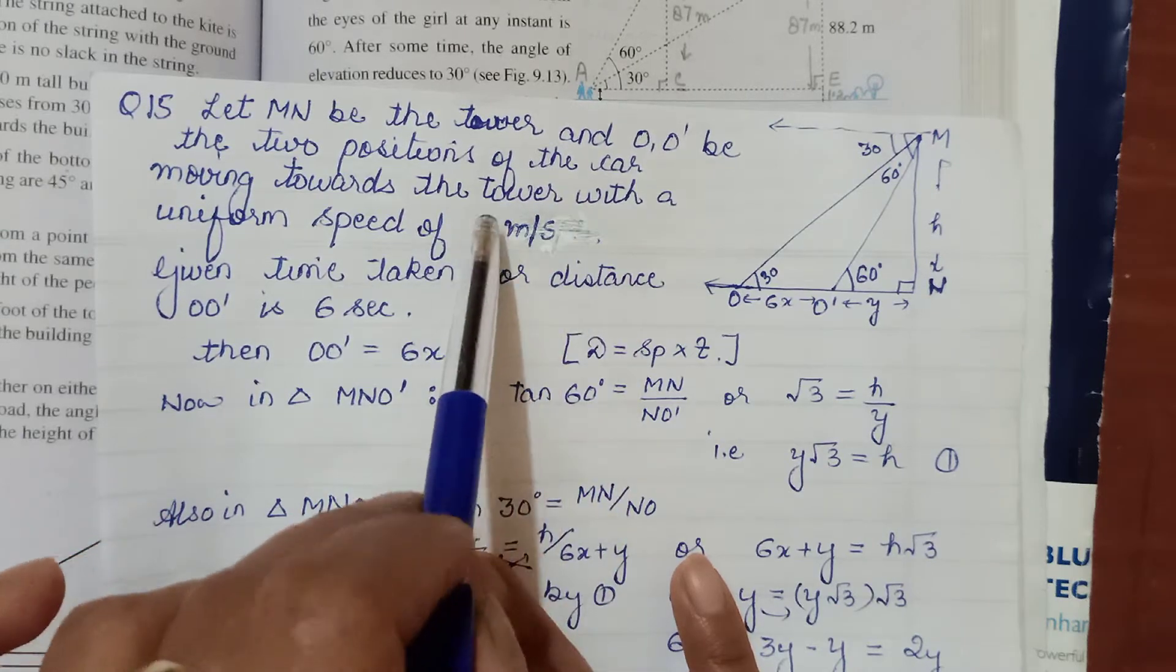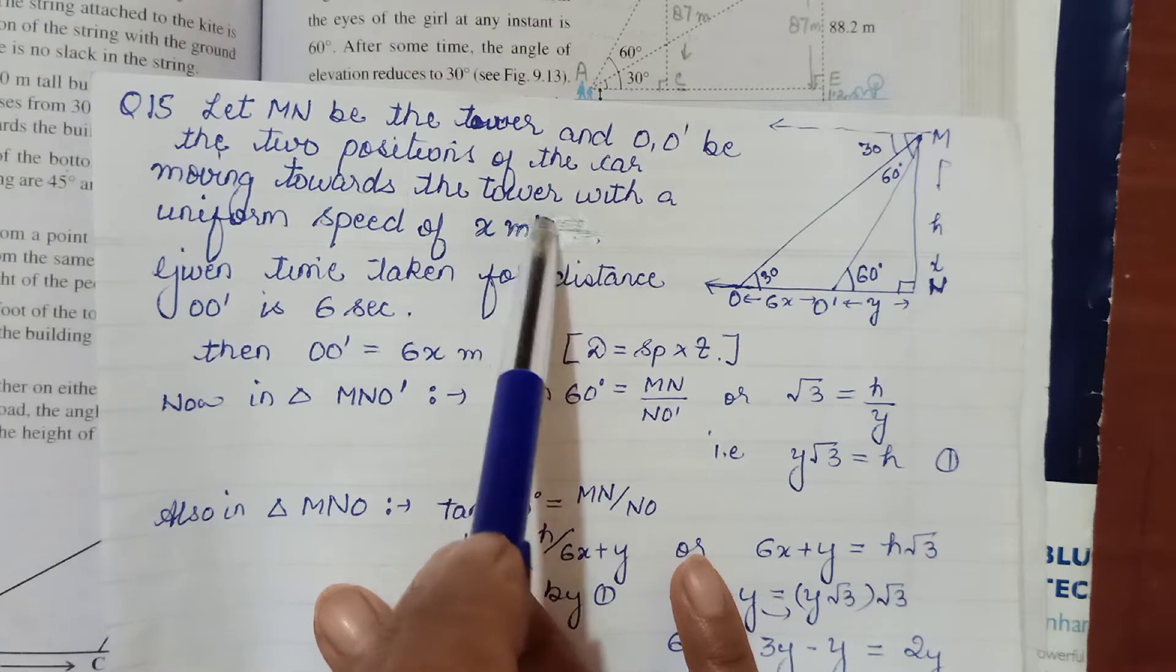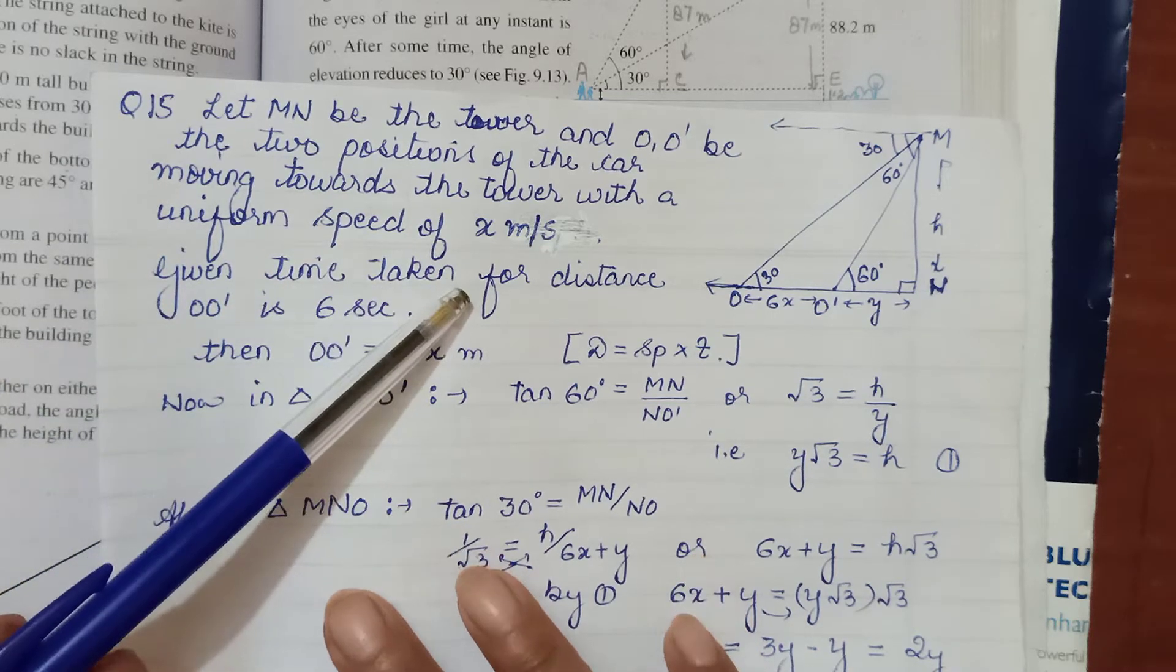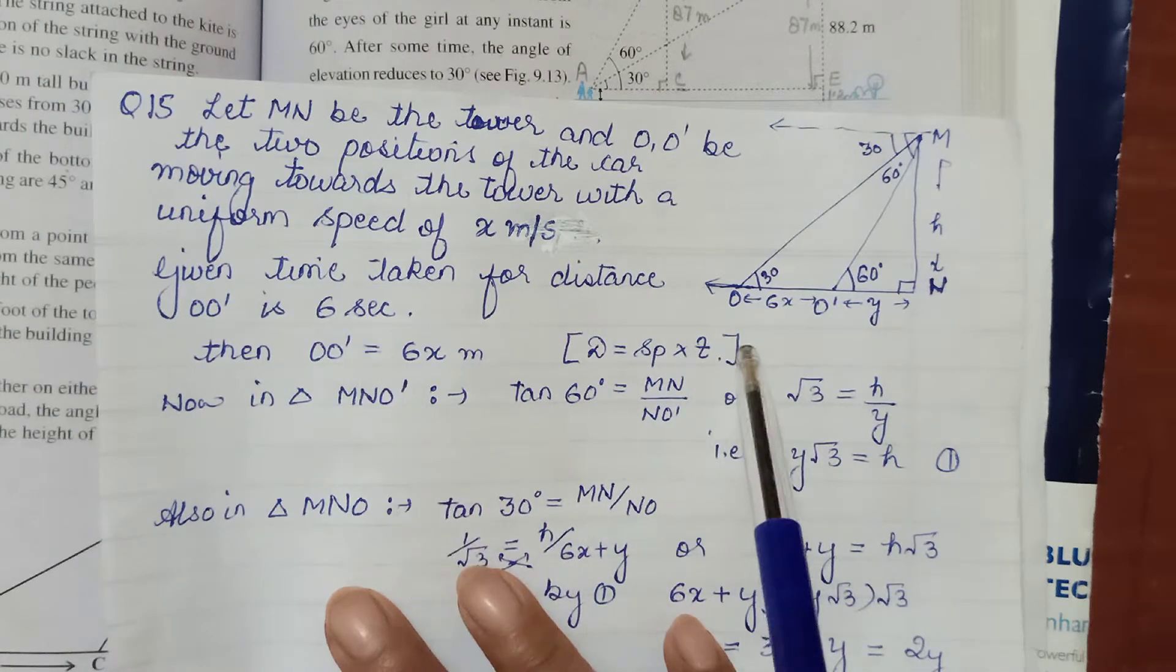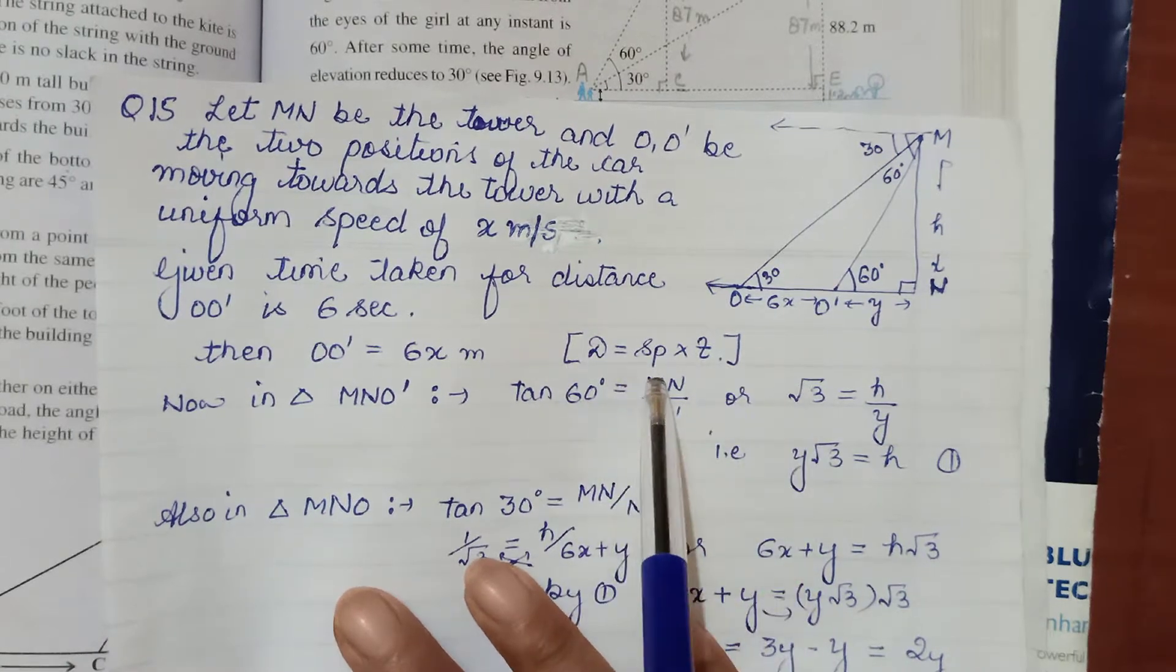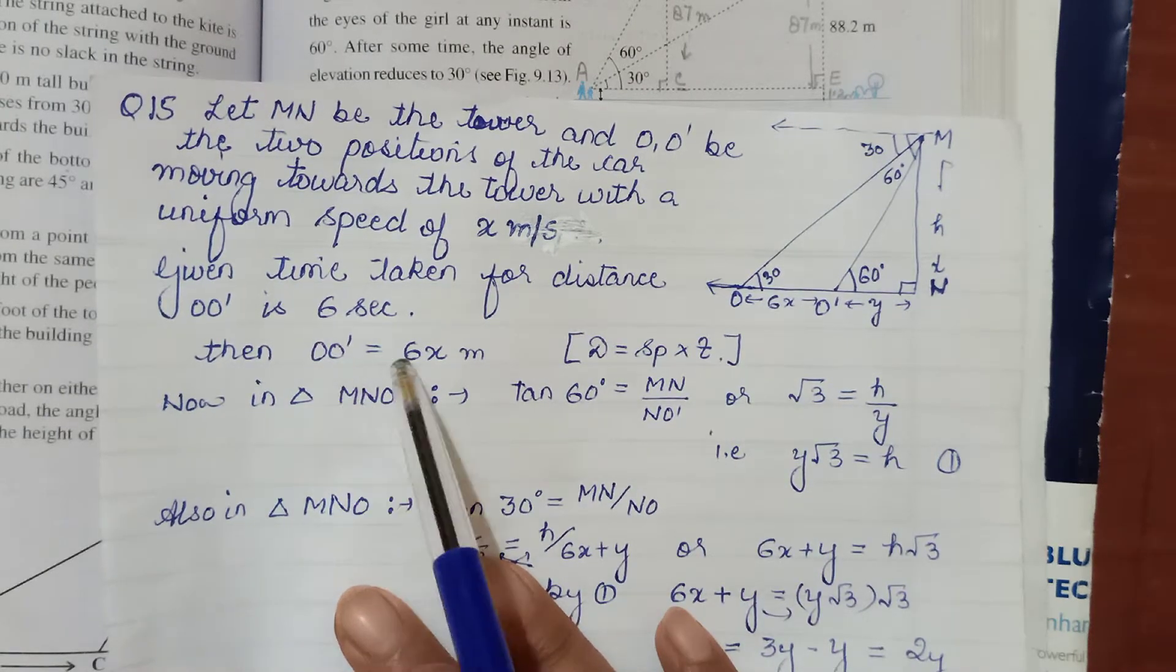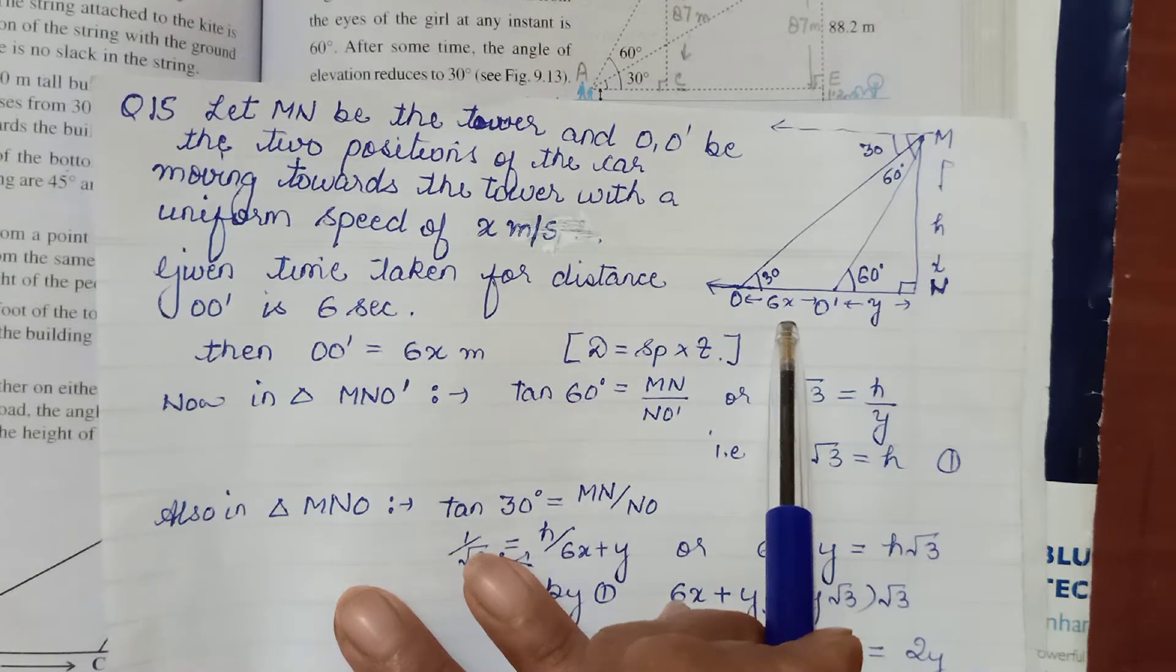We have supposed the uniform speed to be X meter per second. Because we had time 6 seconds given, so we have put unit meter per second. So suppose the uniform speed was X meter per second. Now time given for covering the distance OO' is 6 seconds. So how much distance will it go? We know the formula: distance is speed into time. Speed we have supposed X, time was 6 given. So distance OO' is 6 into X, that is 6X.